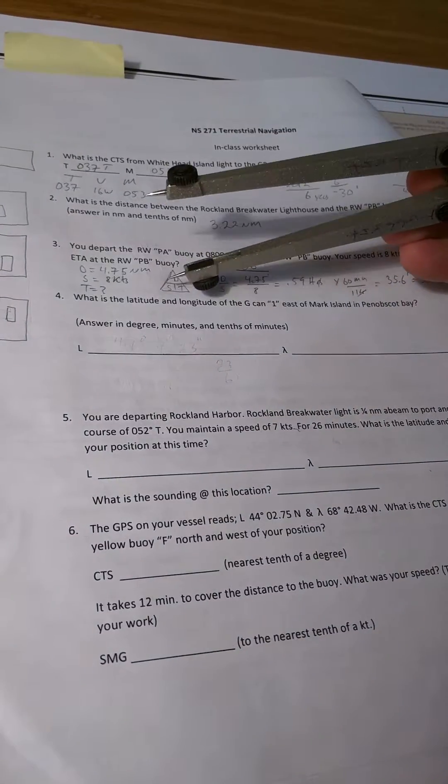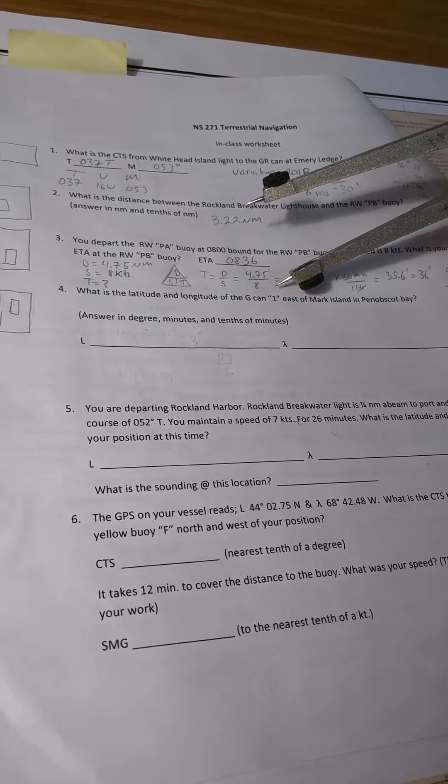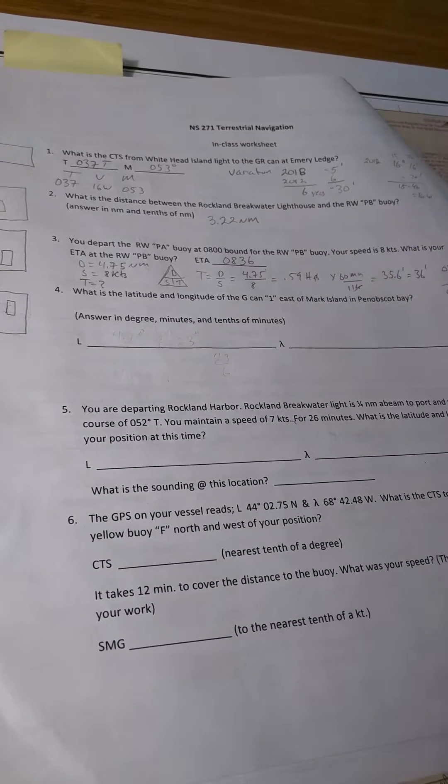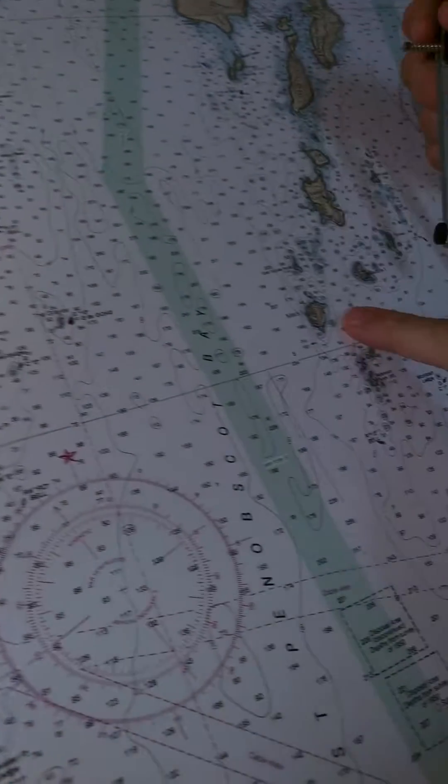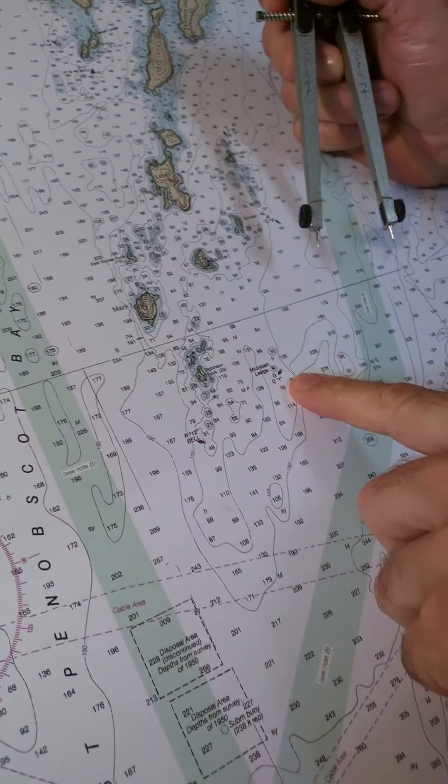Okay, so the question here is what is the latitude and longitude of green can 1 east of Mark Island, Penobscot Bay. So over here is Mark Island, and here's the can.